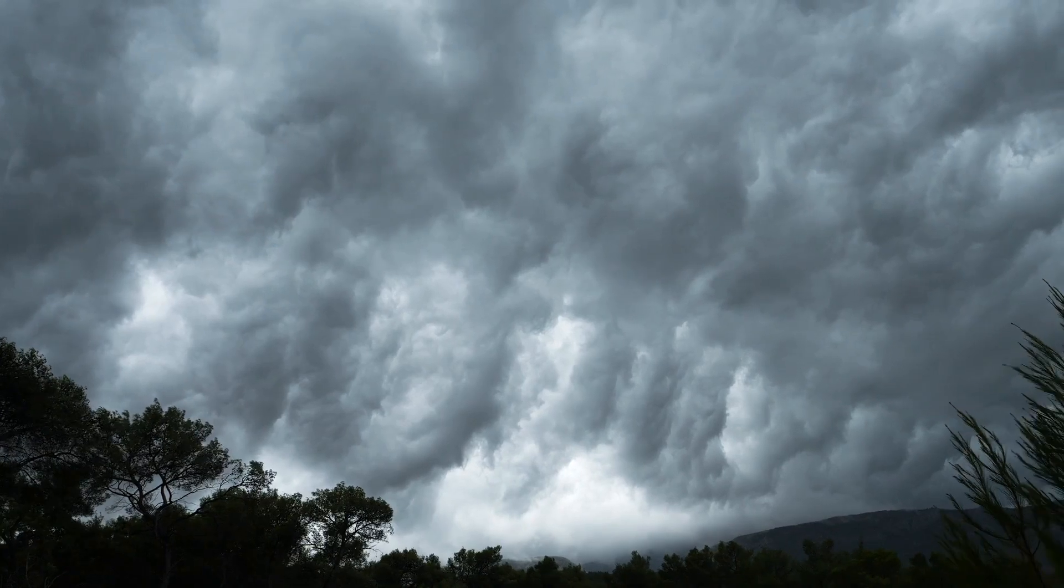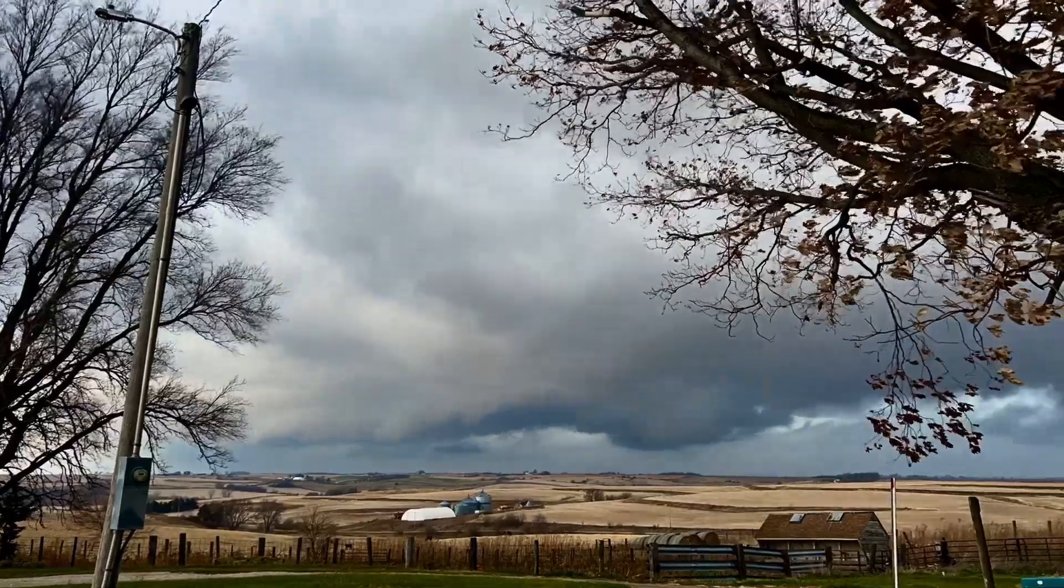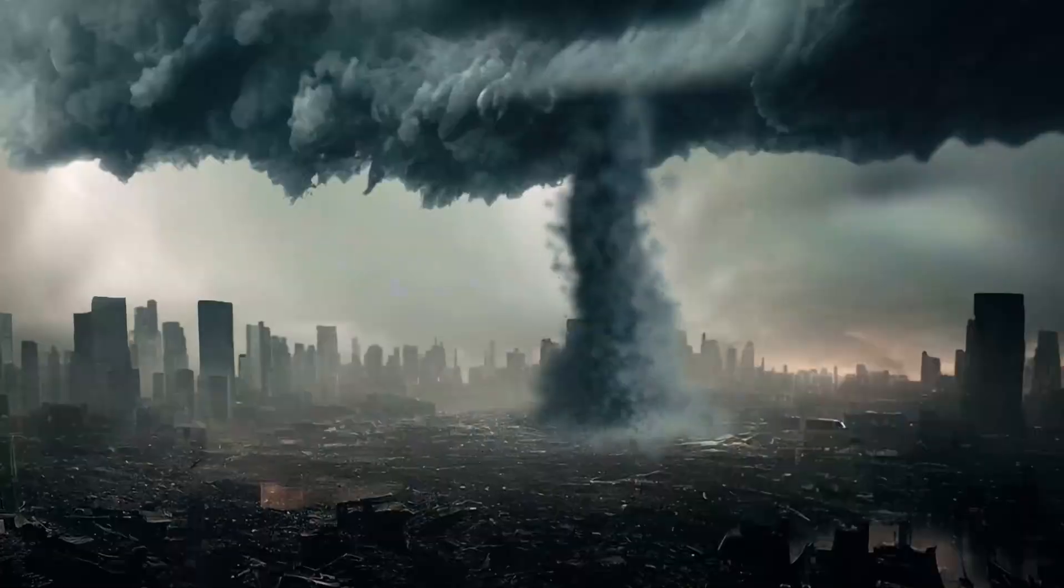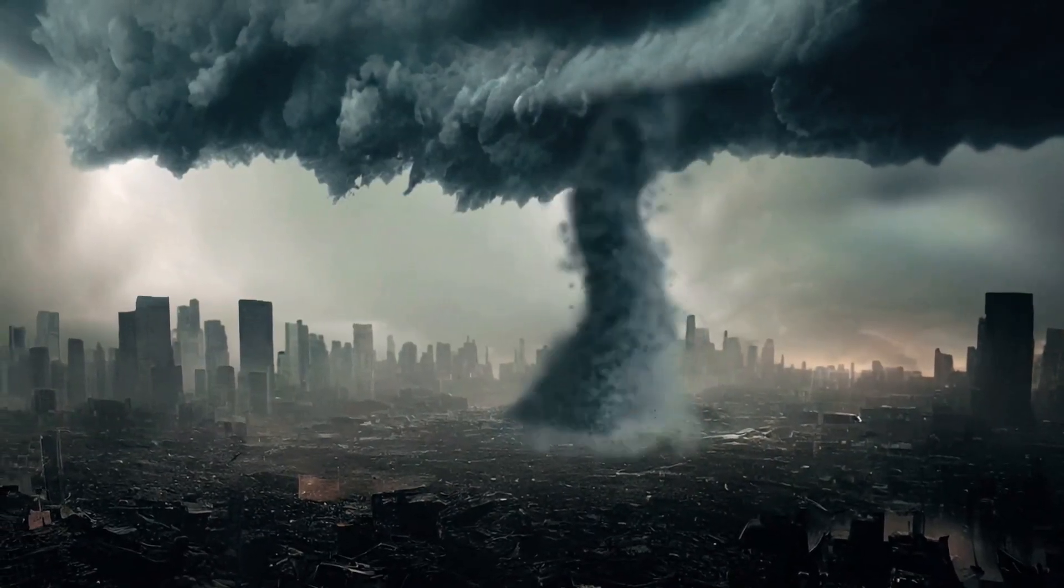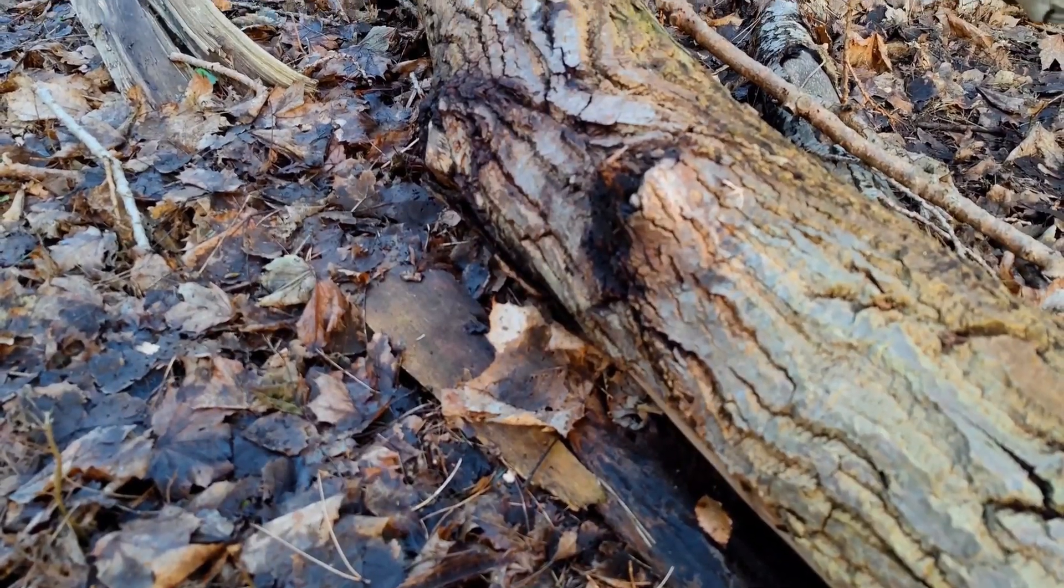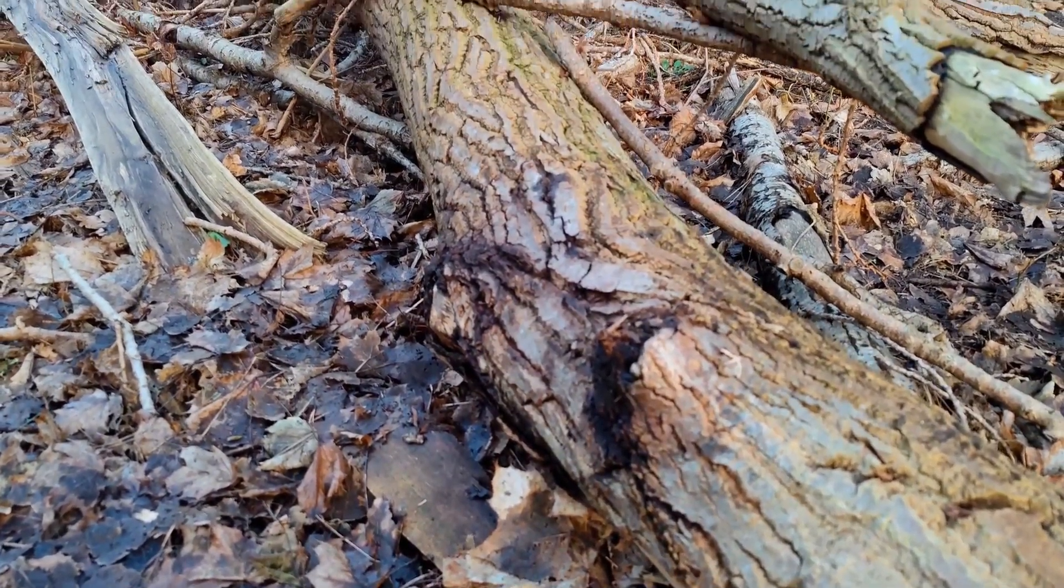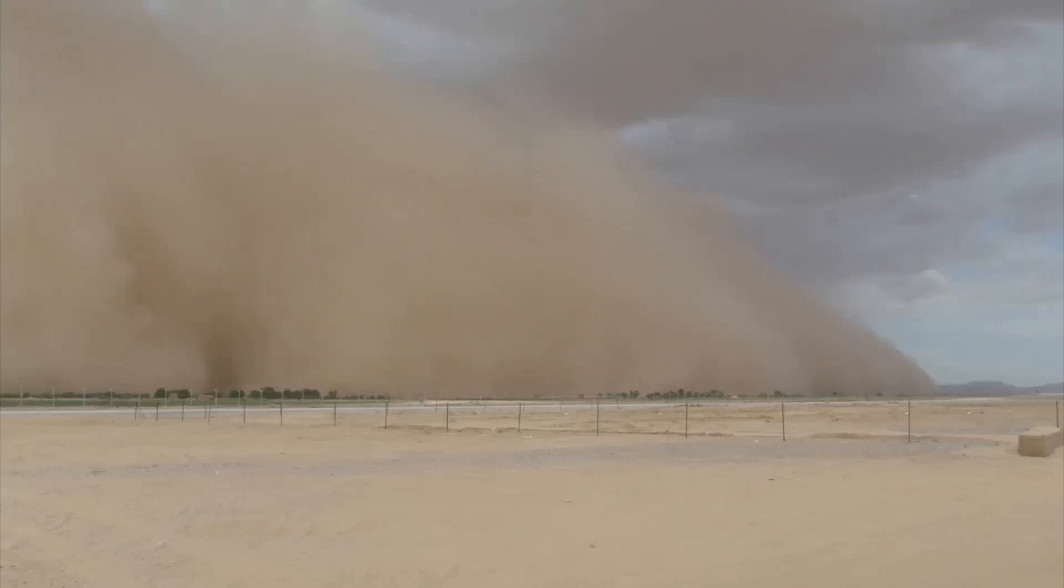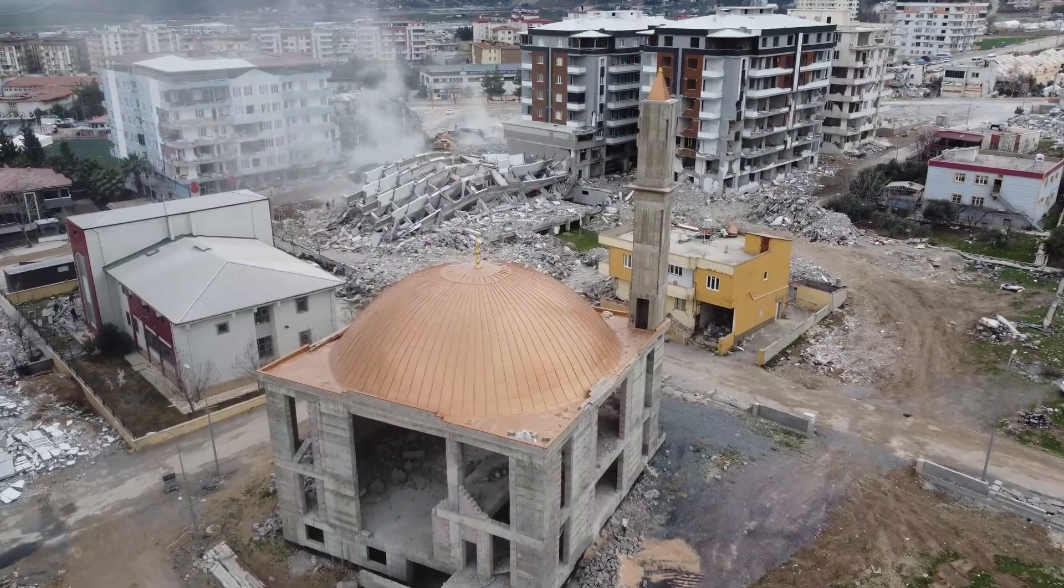But it doesn't stop there. The atmosphere, which has been moving along with Earth, would suddenly become a raging beast. Supersonic winds exceeding 1,000 miles per hour would tear across the planet's surface. These winds would obliterate everything in their path, flattening forests, toppling mountains, and creating dust storms that would blot out the sun. No structure on Earth could withstand such force.